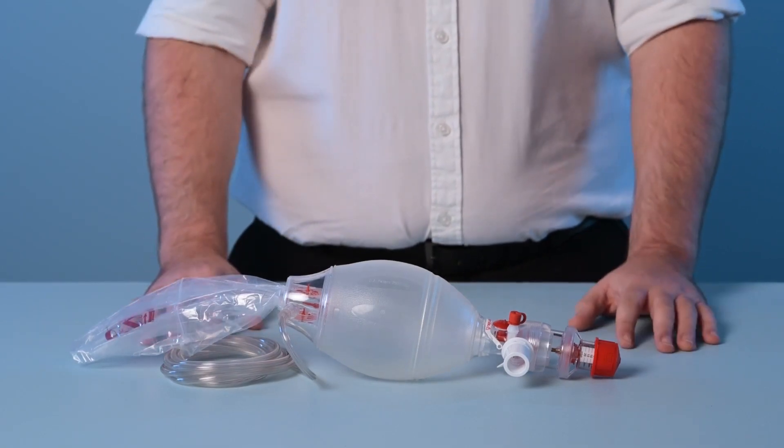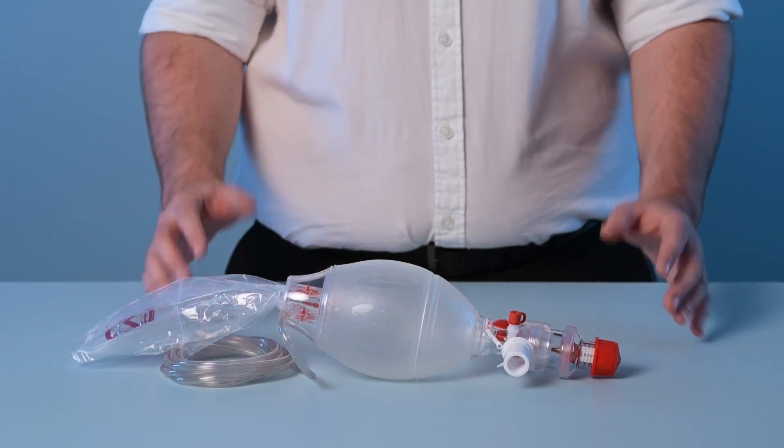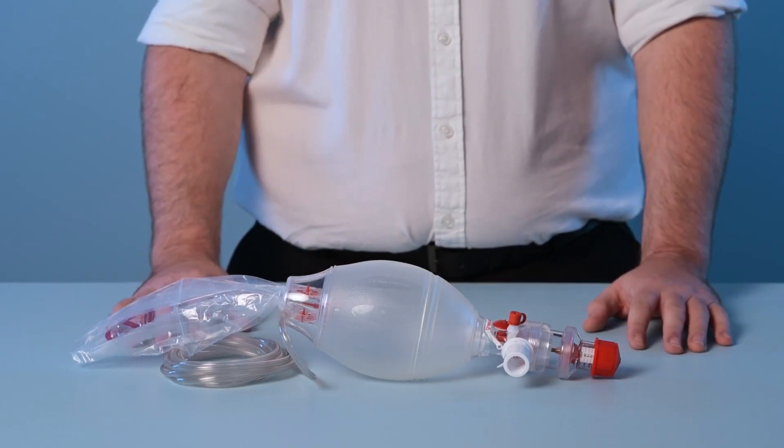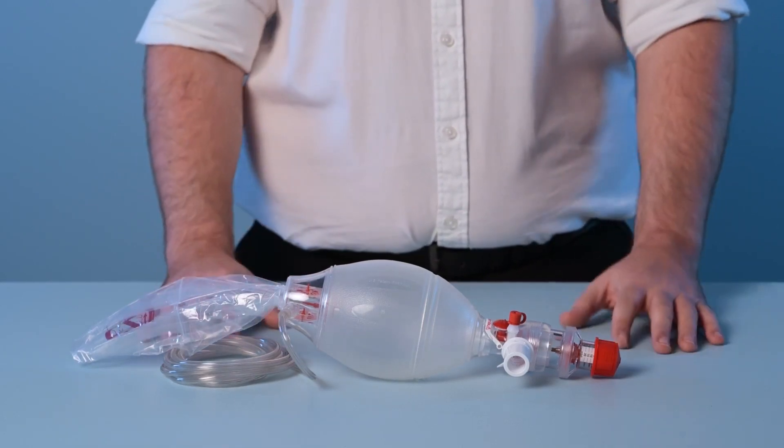On the Spur2, the pressure limiting valve system is designed to activate at a pressure of 40 centimeters of water. When the pressure reaches this level, the valve opens relieving the pressure within the system.